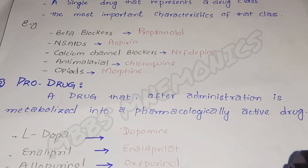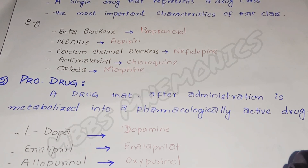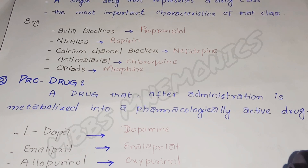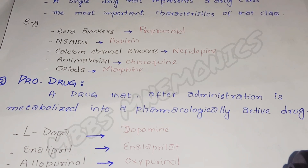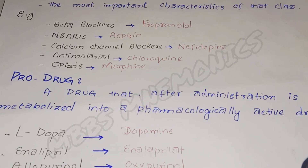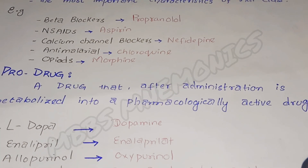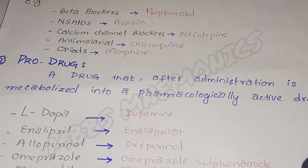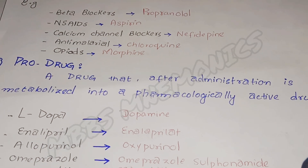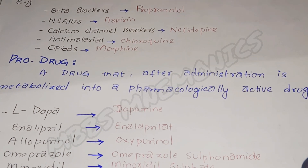Number two is pro drugs. What are pro drugs? Pro drugs are drugs that are inactive before administration, but after administration they are metabolized into a pharmacologically active form that has a specific action in our body.